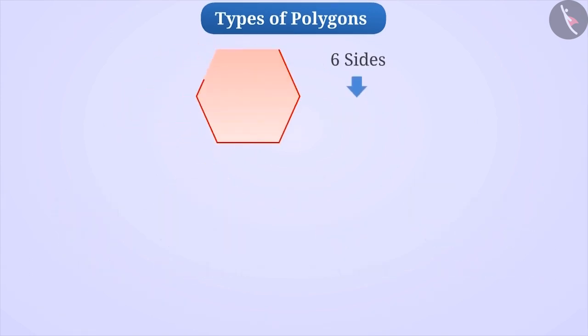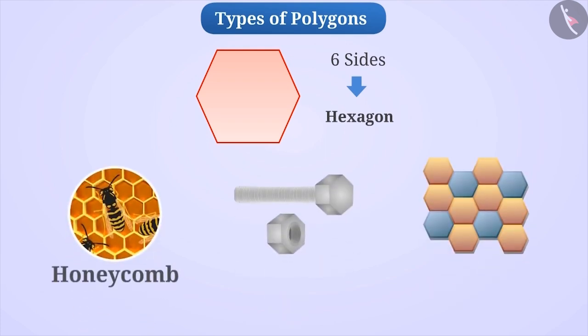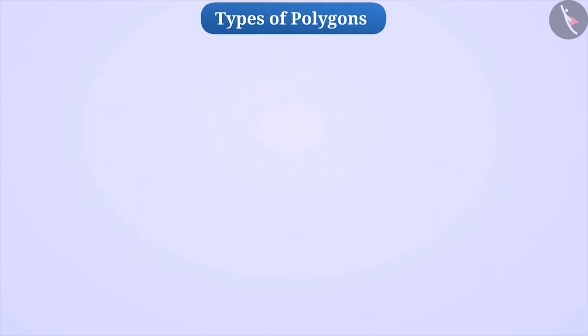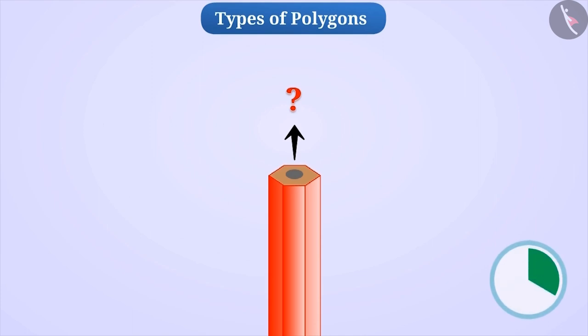A polygon with six sides is called a hexagon. This shape can be seen in honeycomb. Similarly, the shape of a hexagon can be seen in nuts and bolts, floors, etc. Can you tell what shape is the pencil before you sharpen it? Correct. It is a hexagon.